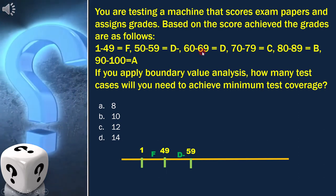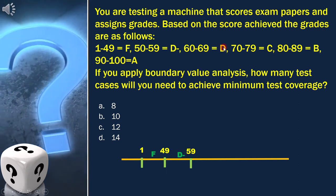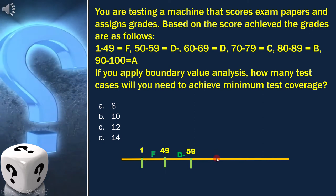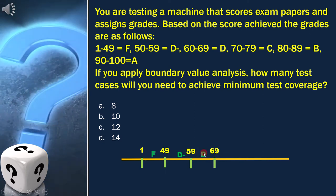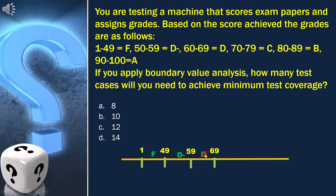Next range is from 60 to 69 and corresponding grade is D. From this we get the next boundary, which is 69 and D is the grade.